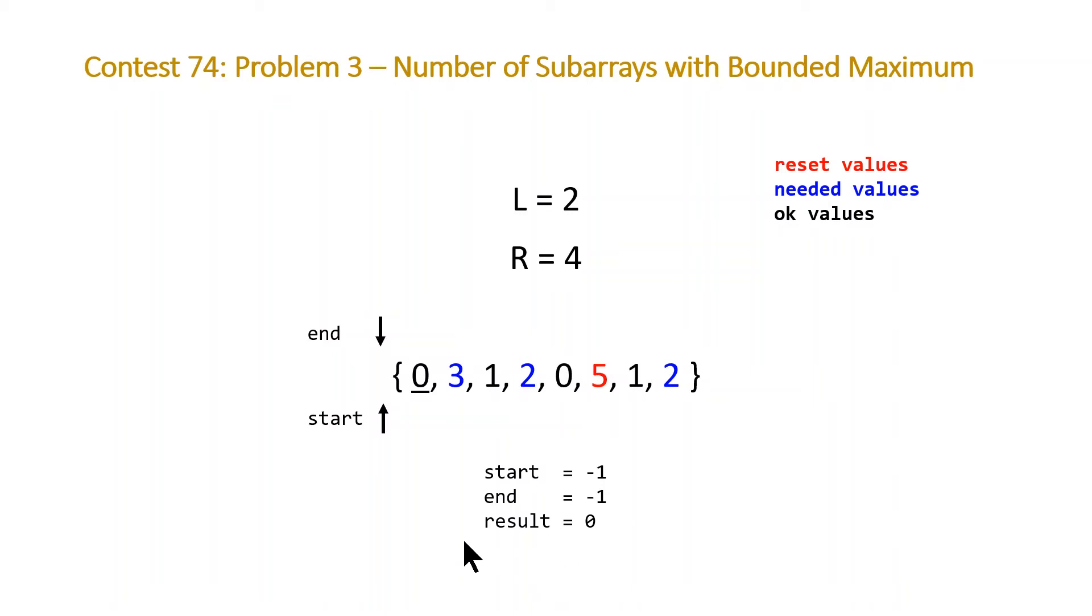Here we have our result initialized to 0 and start and end are initialized to negative 1. We're then going to start by iterating through the loop and checking what value we're looking at and doing something accordingly. At the beginning, whenever we check an okay value, we don't need to do anything. After we process every single element, we are going to add to the result end minus start, which is the length of that prefix.